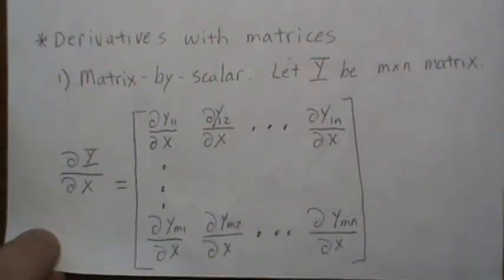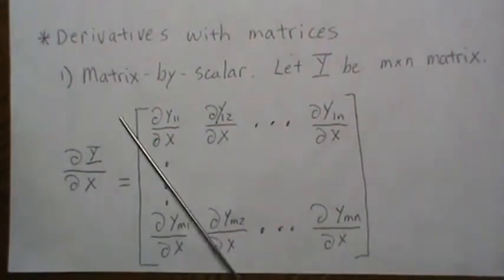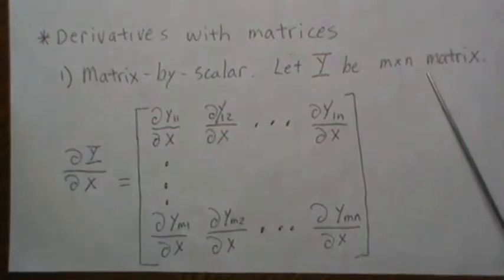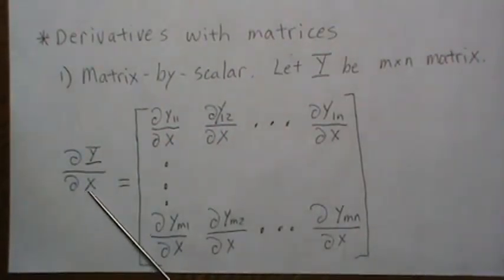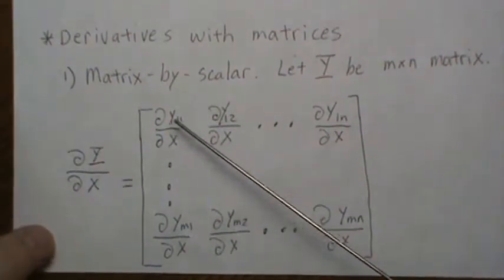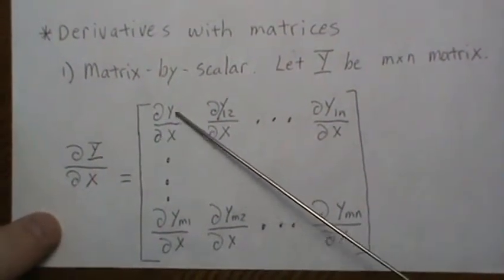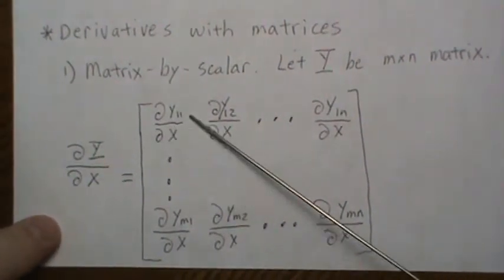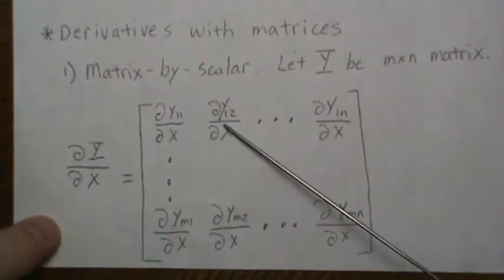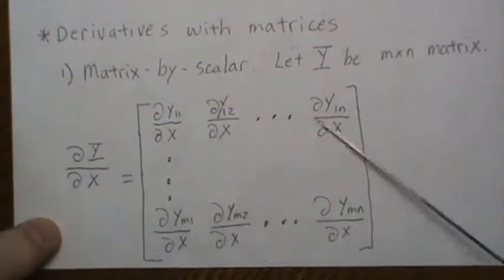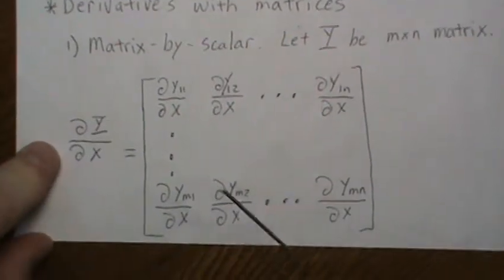For derivatives with matrices: first, a matrix by scalar. The matrix is M by N and we take the derivative with respect to scalar X. You do it component-wise — the partial of Y11 with respect to X is the first row, first column; the first row, second column is the partial there — and so on throughout the matrix.